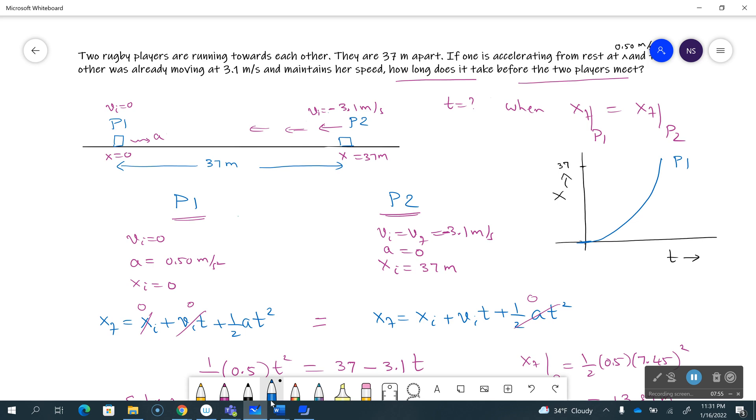And player two is 37 minus 3.1*t, so player two is just coming with a constant velocity, so the constant velocity is that negative 3.1 meters per second. And this is the time where they meet, this is the time 7.45 seconds, and this is the position where they meet, which was 13.9 meters.